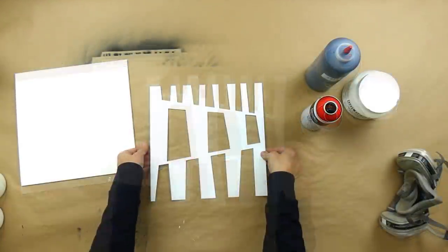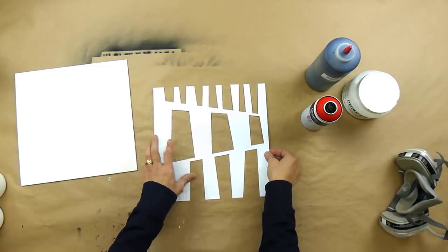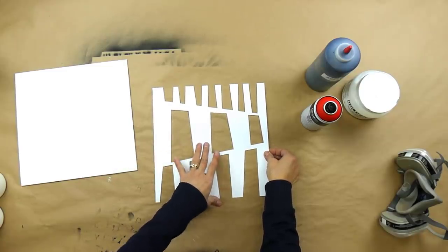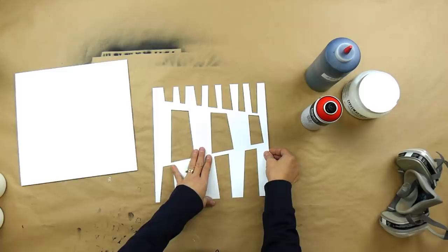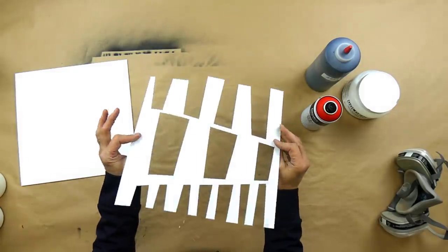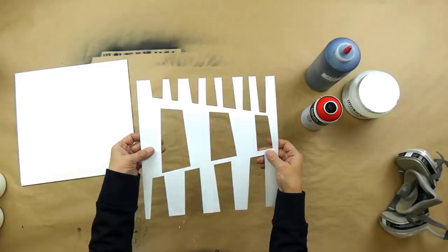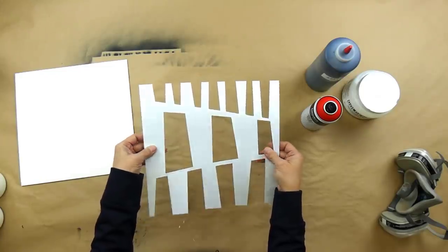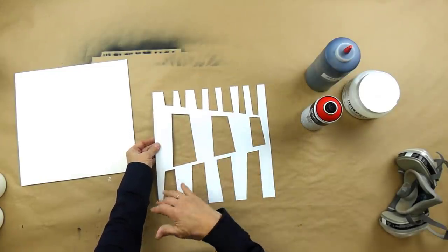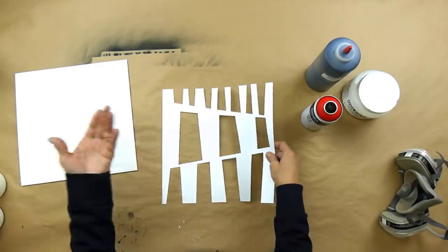The sheets of it are 18 by 24 sheets, and I have a link in my resource section where you can find it. And it's just nice because it's going to hold up to things like spray paint or acrylic, and it lasts a long time.